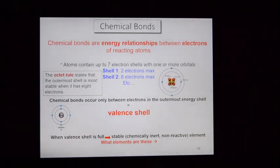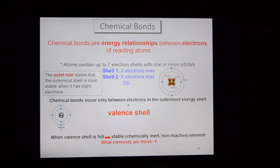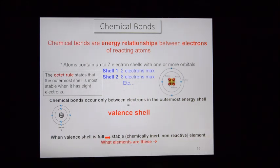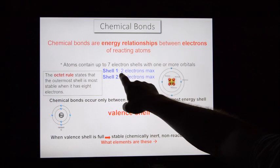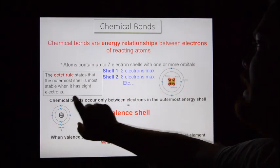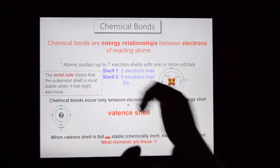The outermost electron shell is considered the valence shell, and it's the valence shell where chemical bonding occurs. For our purposes, the first energy shell can hold a maximum of two electrons — once it has two, it's happy. The second energy shell can hold a maximum of eight electrons. Two in the first shell, eight in the second — that's as high as we're going to go.